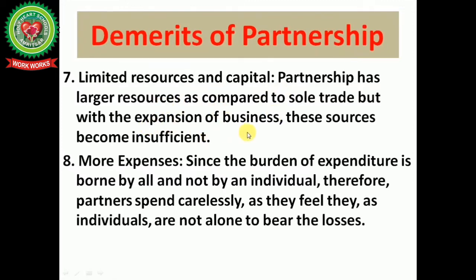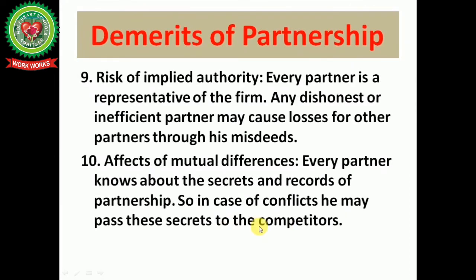Next is limited resources and capital — though larger than sole trade, resources become insufficient with business expansion. Next is more expenses — since the burden of expenditure is shared by all, partners may spend carelessly. Next is risk of implied authority — any dishonest or inefficient partner may cause losses for others through misdeeds. Next is effects of mutual differences — since every partner knows the firm's secrets, in case of conflict they may pass these to competitors.